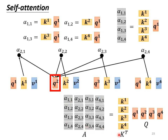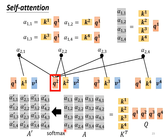Since matrix K consists of columns k1 to k4, we use the transpose of K to match dimensions. Multiplying the transpose of K by Q gives matrix A, which stores all attention scores. We then normalize these scores—for example, by passing every column through a softmax function so elements in the same column add up to one. After passing A through softmax, the values change slightly; we represent this result as A'.